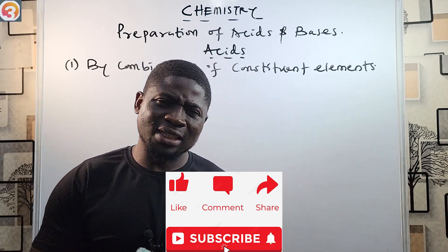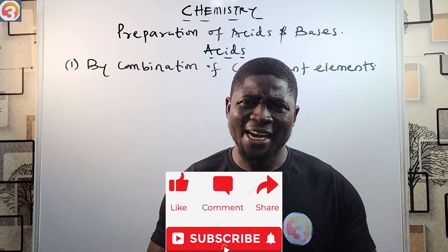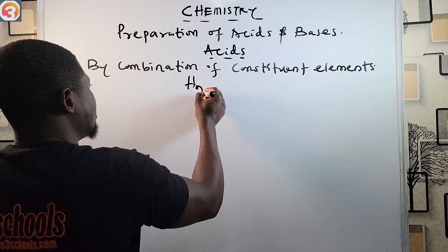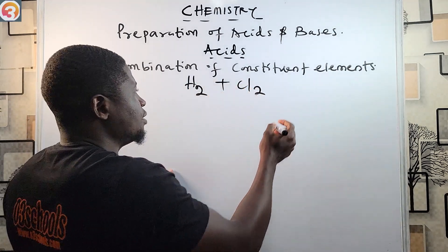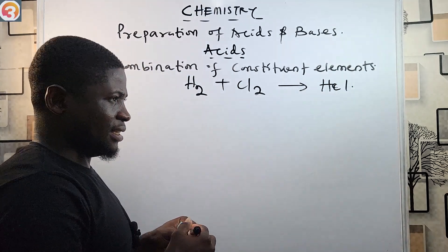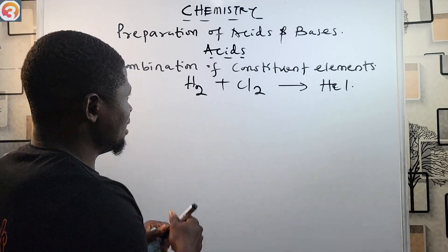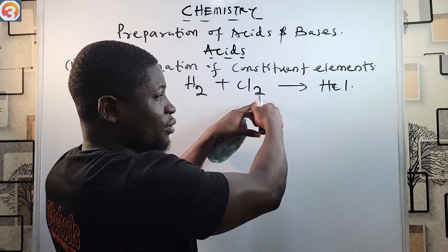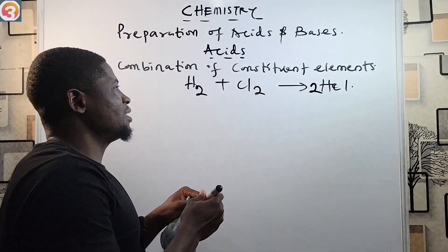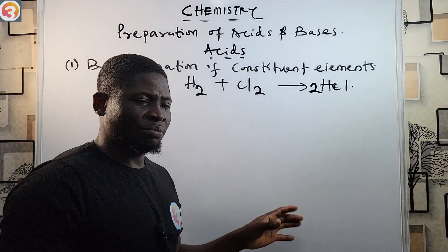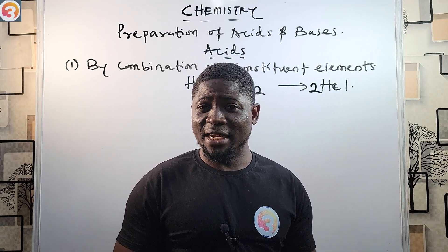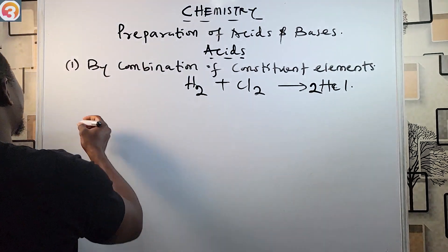By combining the constituent elements found in the acid and reacting them together. For example, in the preparation of hydrochloric acid, hydrogen gas (H₂) reacts with chlorine gas (Cl₂) to give us HCl. This reaction needs balancing — there are two hydrogen atoms and two chlorine atoms on the left but only one HCl on the right — so we put a 2 in front of HCl to balance it. This is one way we can prepare acid: by combination of constituent elements.